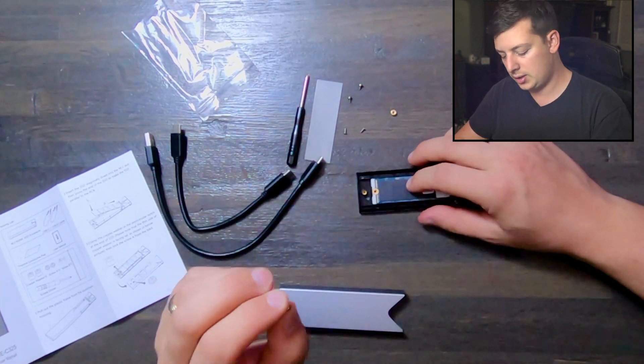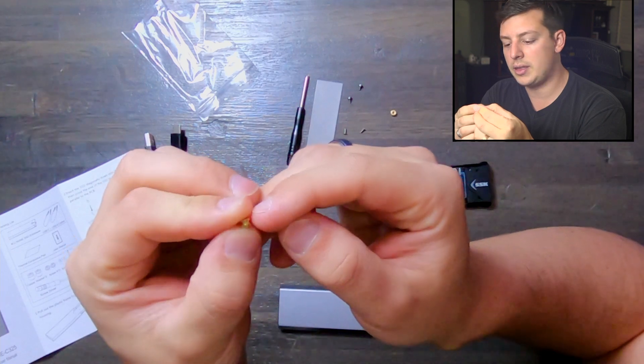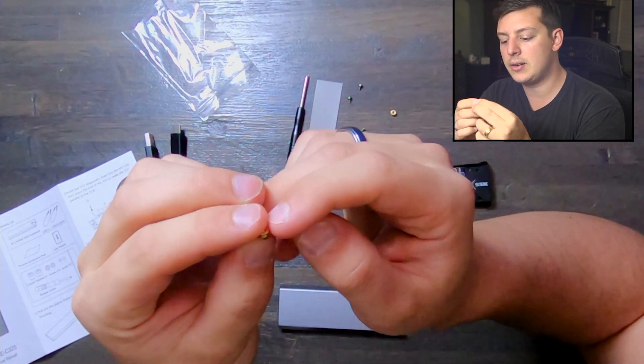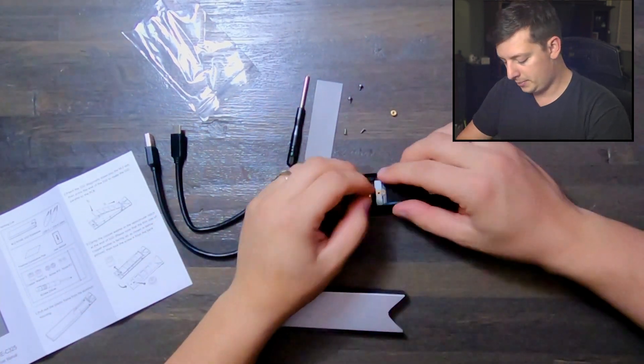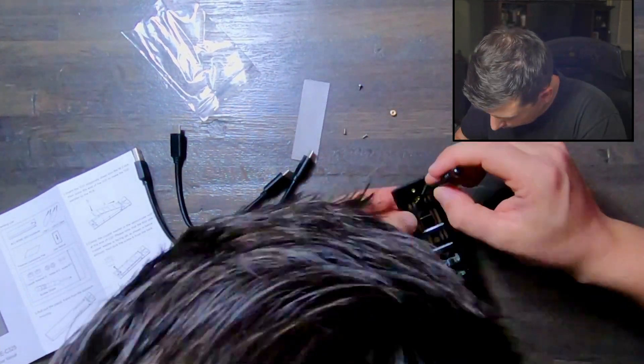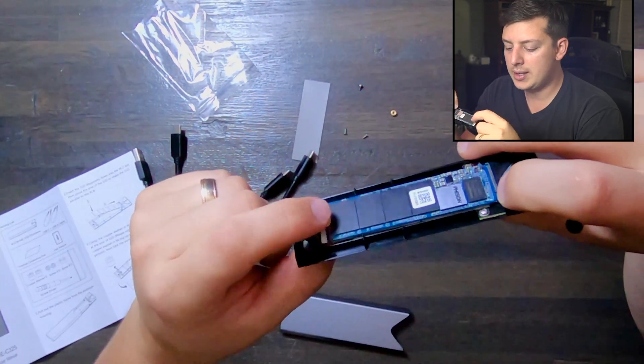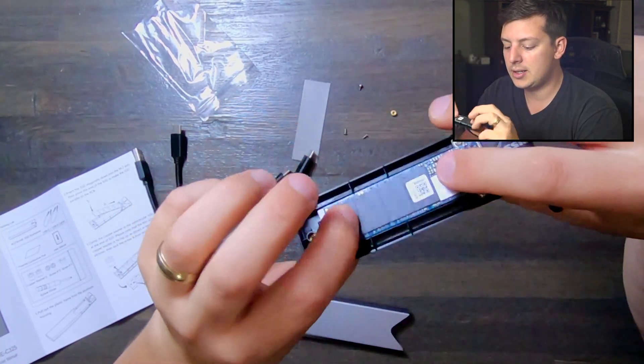The instruction says there is a thicker side and a thinner side, and the thinner side goes facing up. We got the nut on with the screw, just like in the instructions. Let's go ahead and read the next step.